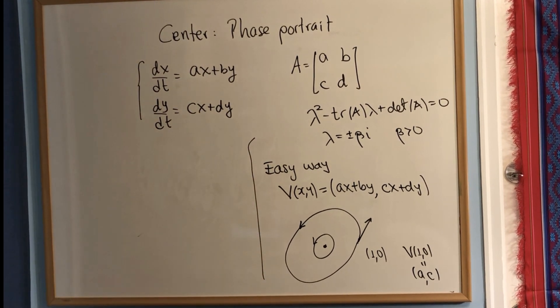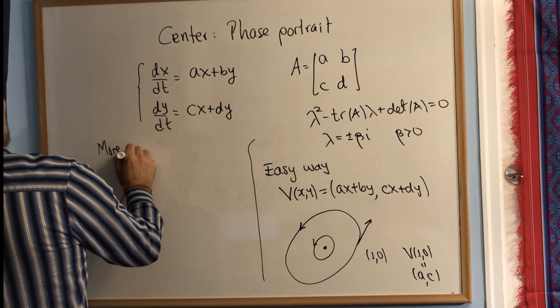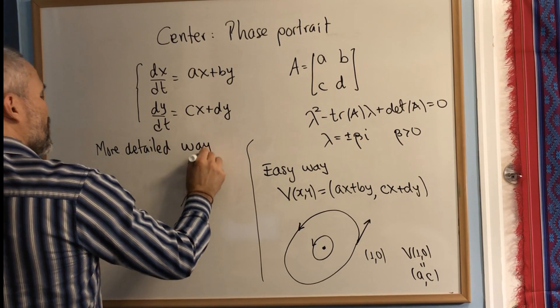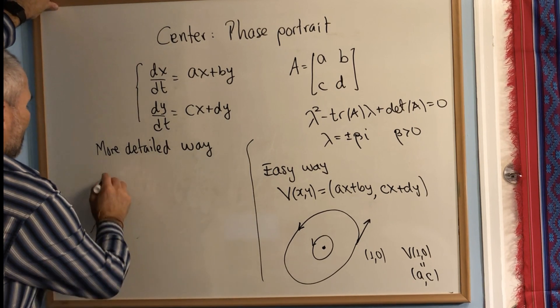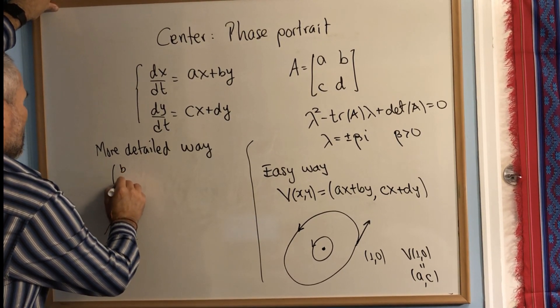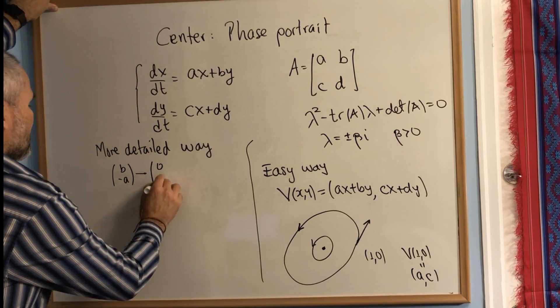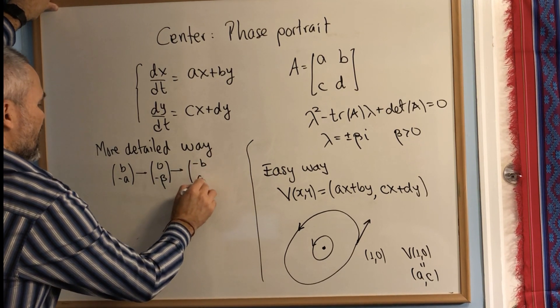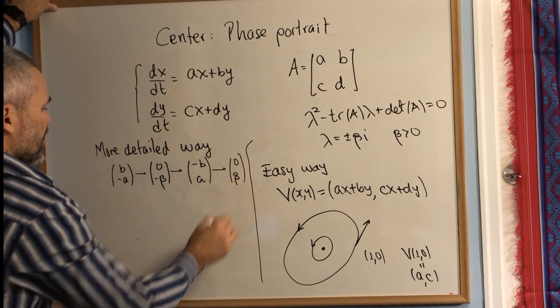For the other case, which I'm calling the more detailed way, we compute these four vectors: we draw the vector (b,-a), then (0,-β), then (-b,a), and then (0,β).